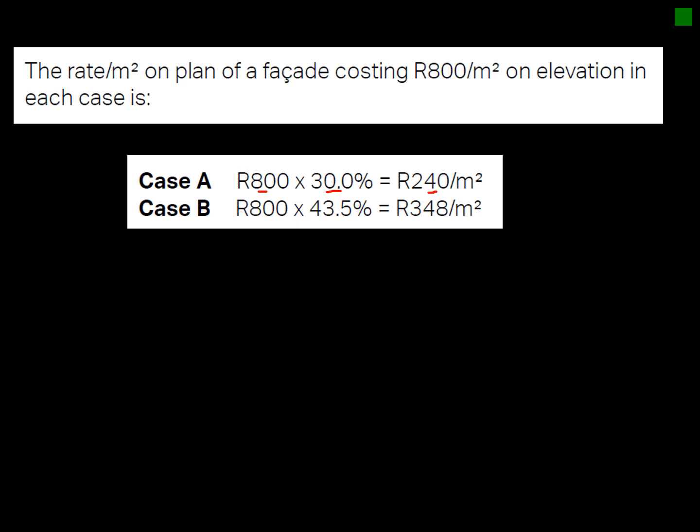This excludes finishes like tiling, which stays the same regardless of shape and won't influence the rate much. But for Case B, where the ratio is 43.5%, it works out at 348 rand per square meter. So you can see how the building shape immediately has an influence on the cost of the external facade, though not necessarily on the rest of the building.